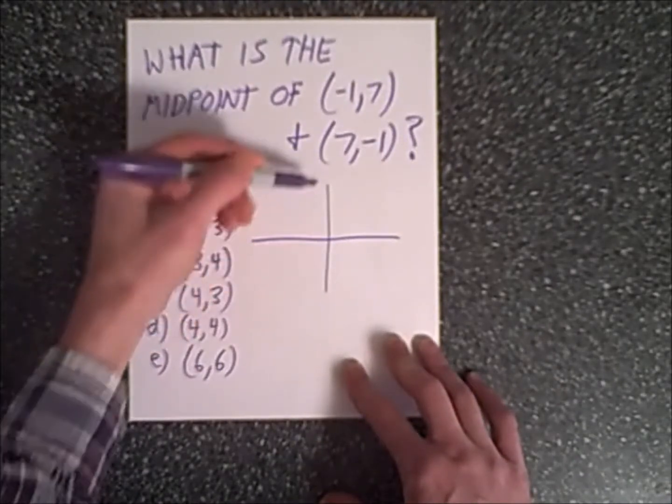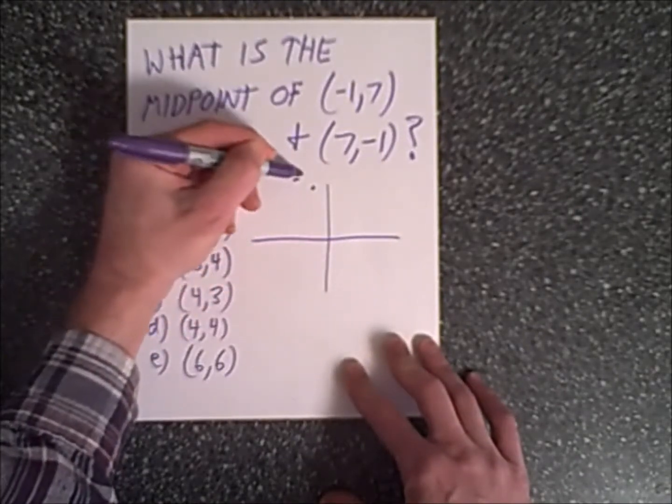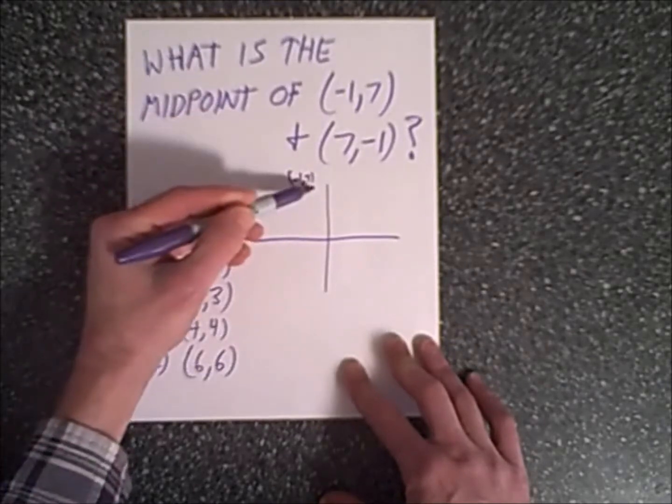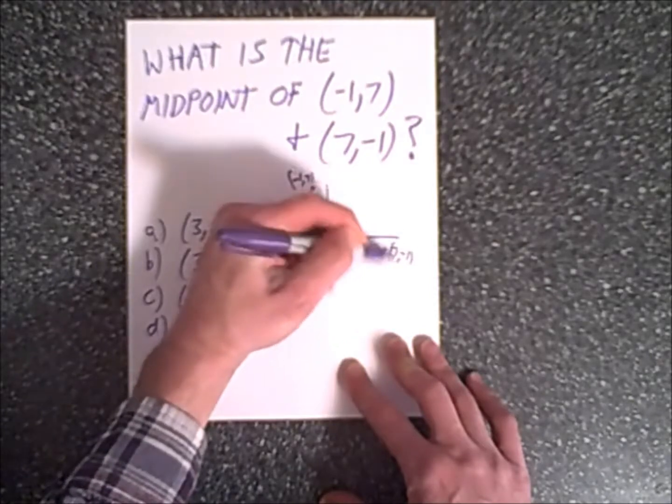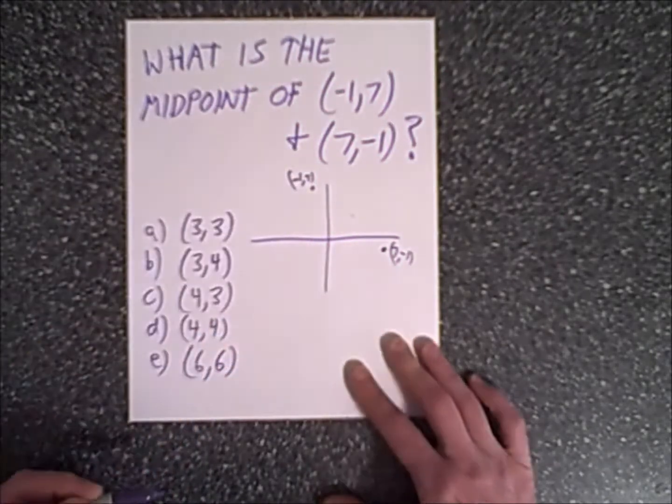Negative 1 this way, 7, so this is negative 1, 7, and 7, negative 1 is way over here. Our solution is going to be somewhere in the middle, roughly here.